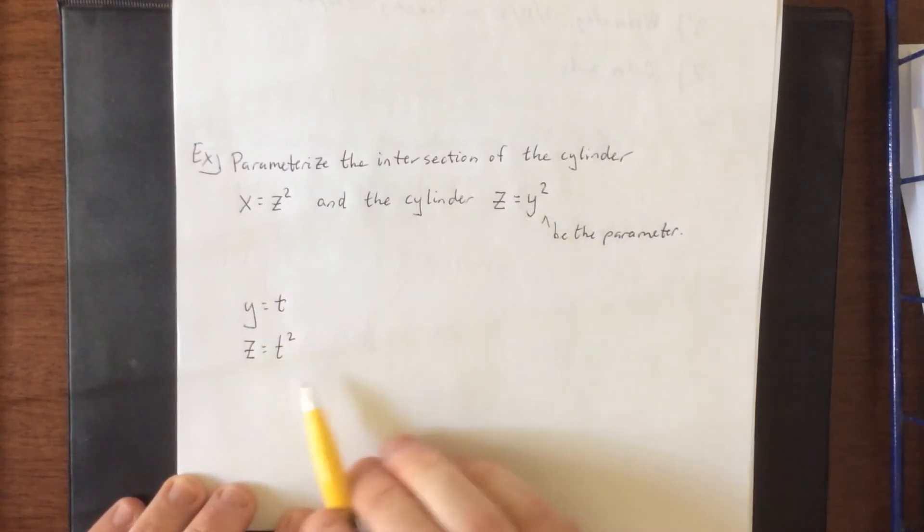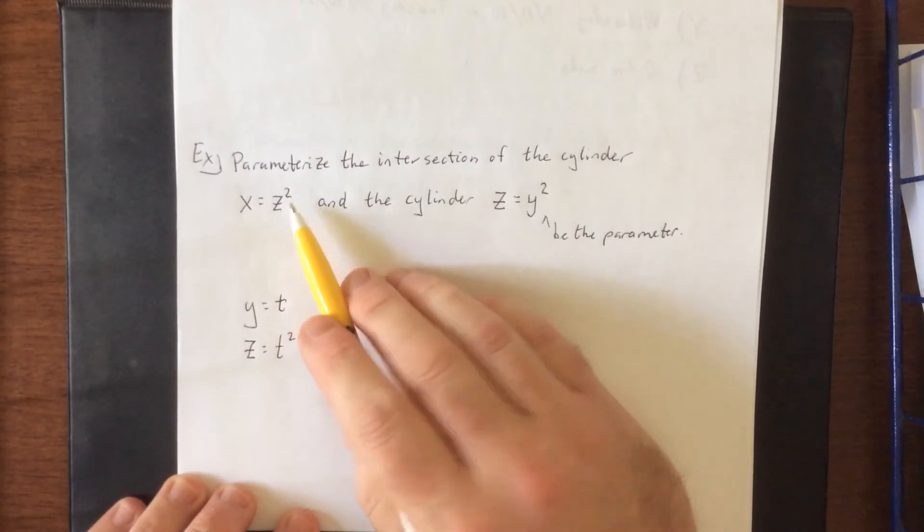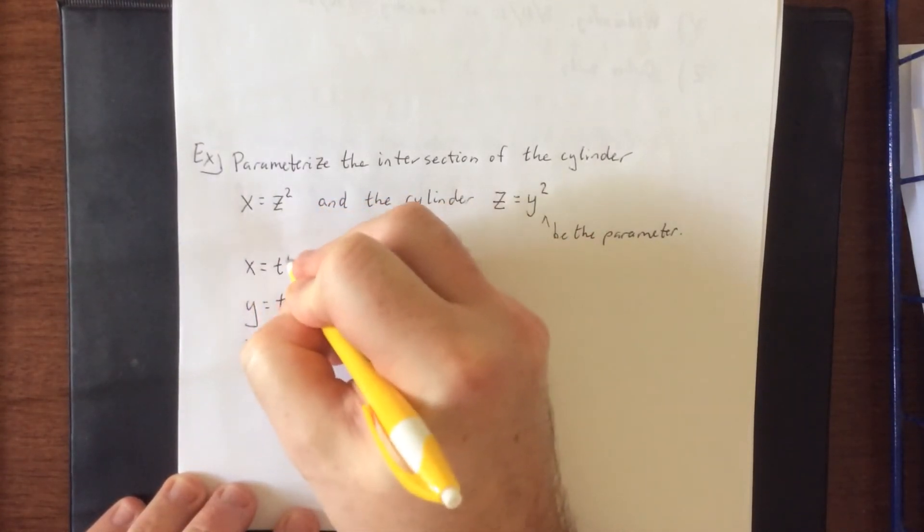Then I can take what I just got for z and plug it in here. We would wind up with x is equal to t squared squared and that would be t raised to the fourth power.